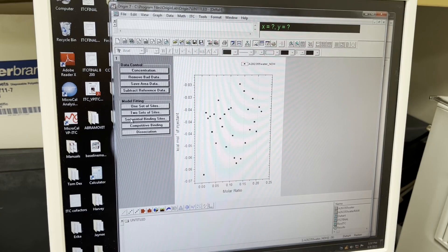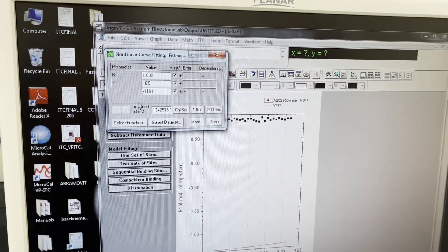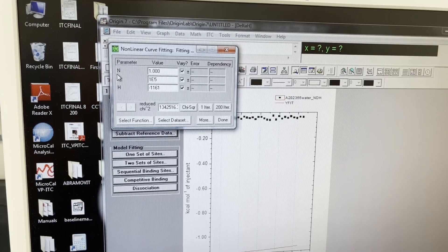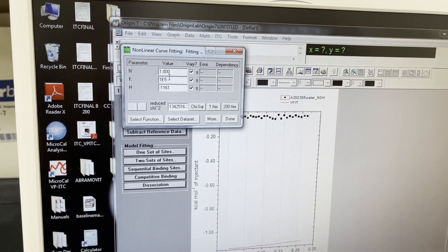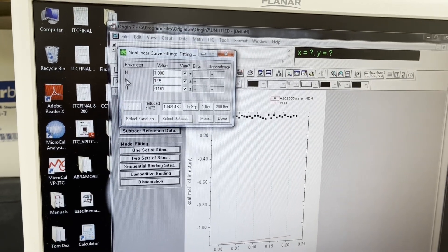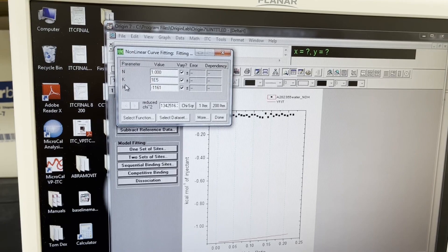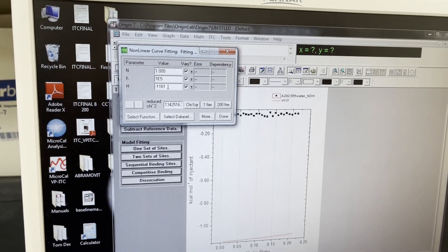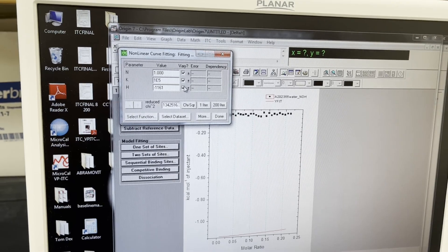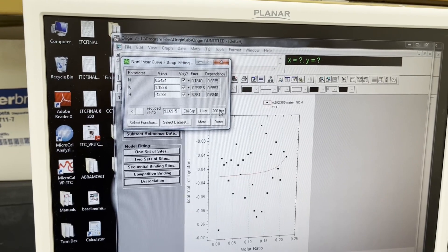There are several different choices in binding models. One set of sites, two set of sites. You can look up the math for all of it. N refers to the molar ratio. If you have a one-to-one binding situation this would be close to one. K is your KA so it's your K association. And H is enthalpy. You can change these to have different starting values if you would like. You can fix one or you can have them checked so they can vary. Basically all I do is hit 200 iterations.